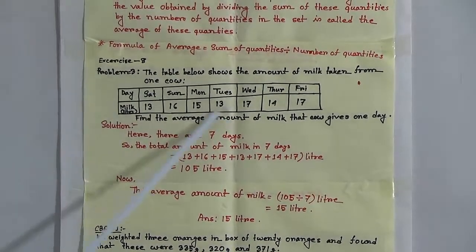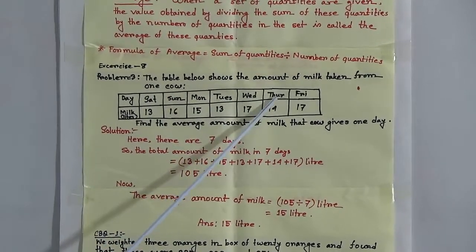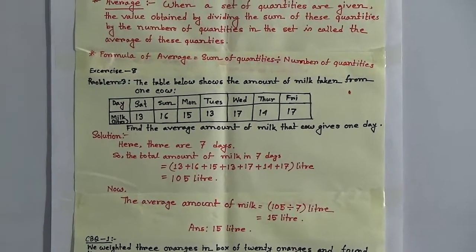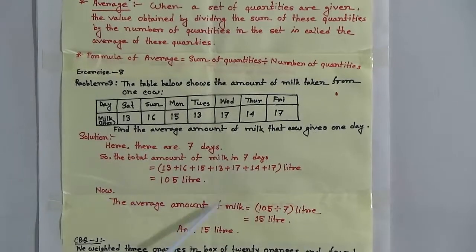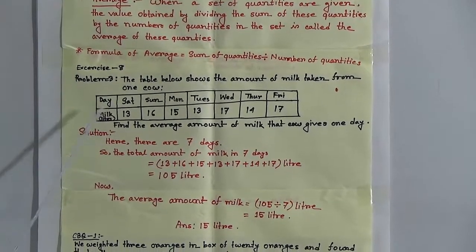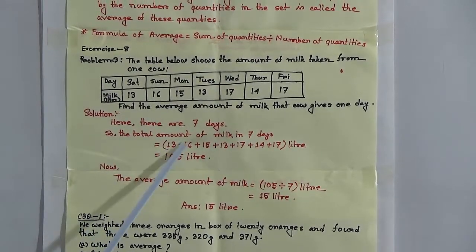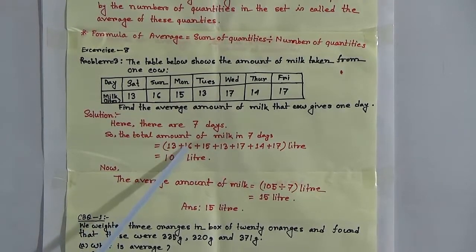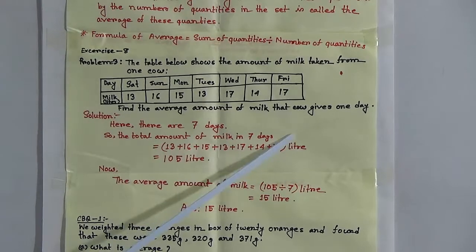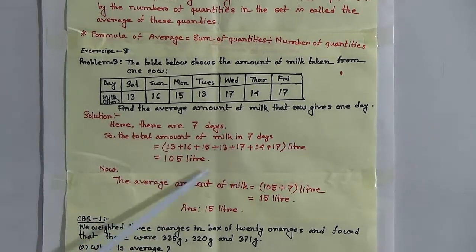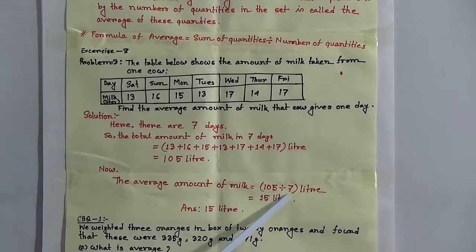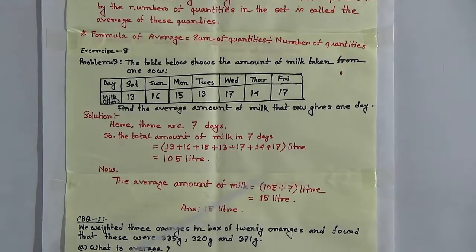Solution. There are 7 days, so the number of quantities is 7. In order to find the average amount of milk, we must add all the quantities: 13 + 16 + 15 + 13 + 17 + 14 + 17. If we add these, we get 105 litres. So the average amount of milk equals 105 divided by 7, and we get 15 litres.